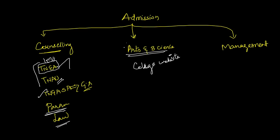If you apply to a college, you can check your email or phone for updates. If you want to go to a private arts and science college, you can go through an online application, direct application, or offline application.